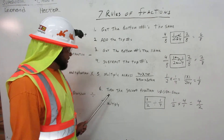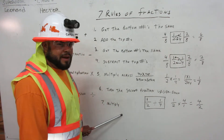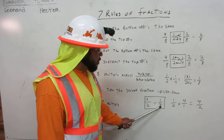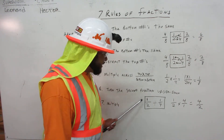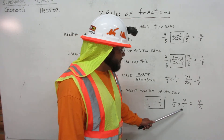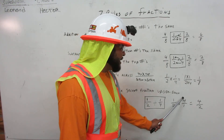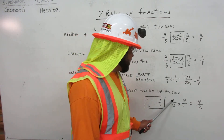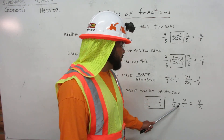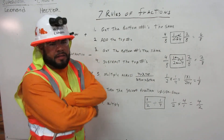Now we have division. The rule is to turn the second fraction upside down, then multiply it. For example, we have one half divided by one quarter. We box it up, because we're going to change that. So now we have one half times four over one — because we have it upside down. That equals four over two: four times one equals four, and two times one equals two. And that's how you do all the division fractions. Thank you.